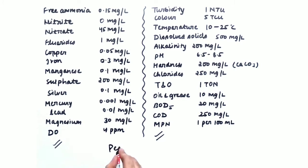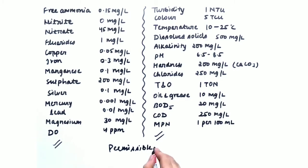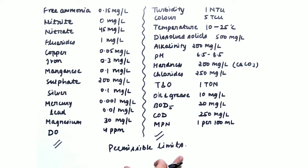This is a table for permissible limits. You should at least learn these values for some important elements and important properties. There are innumerous elements, but I have extracted the most important ones for which the permissible limits should be remembered.